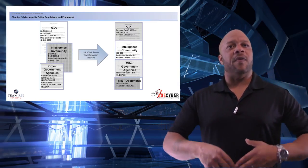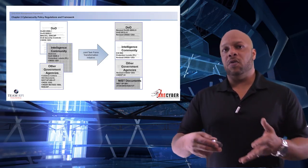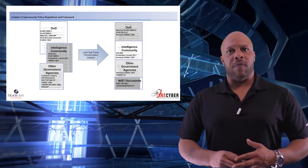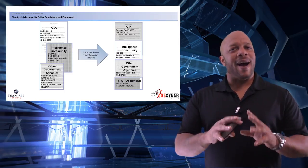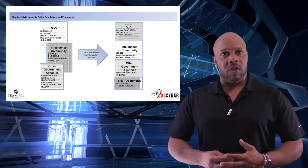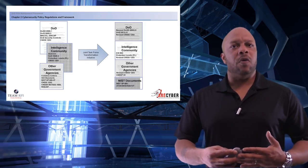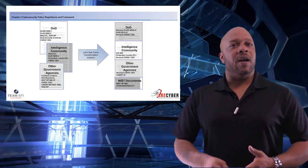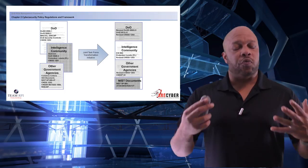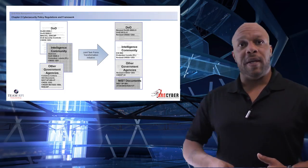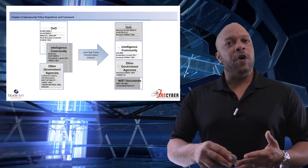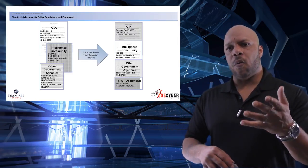For the intelligence community, we used principally the DCID 6/3, as well as the DoD instruction 8500.02 for the controls and protection levels implemented within the CNSSI 1253 documents. That has now been condensed to the ICD 503 and the revised CNSSI 1253. For all other government agencies where we were using the common controls, ISO standards, NIST 800-37, CNSSI 1253, the NITSI, and the NIAP — that has been greatly reduced to simply the NIST Special Publications 800-37, 800-39, 800-53, 800-53A, and 800-137.